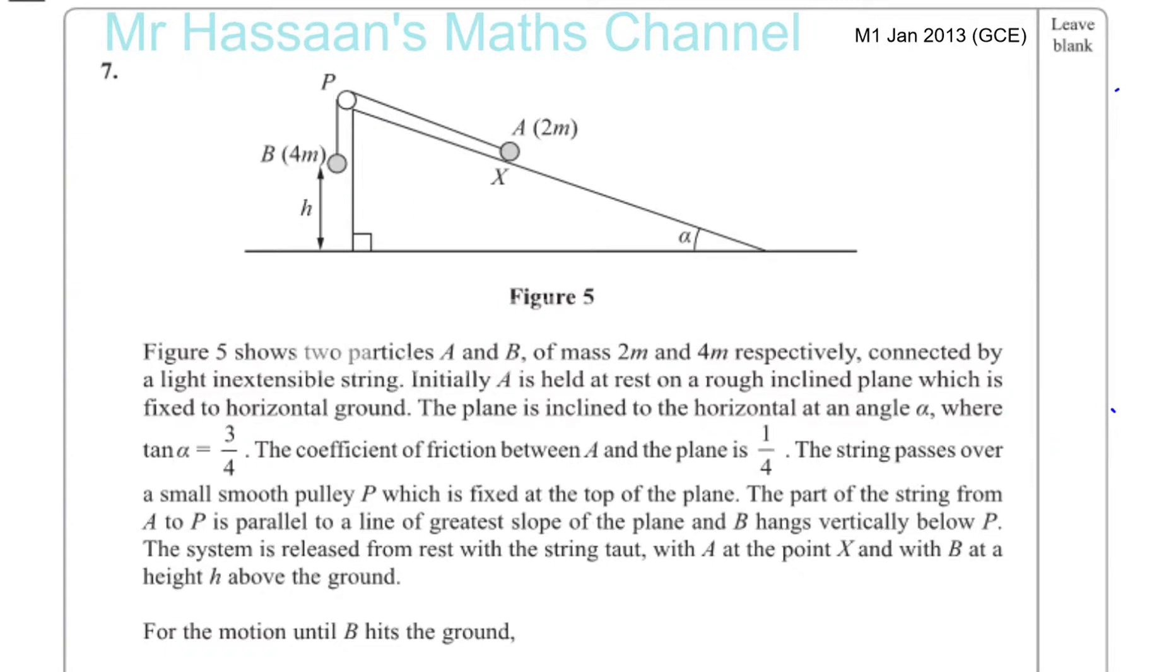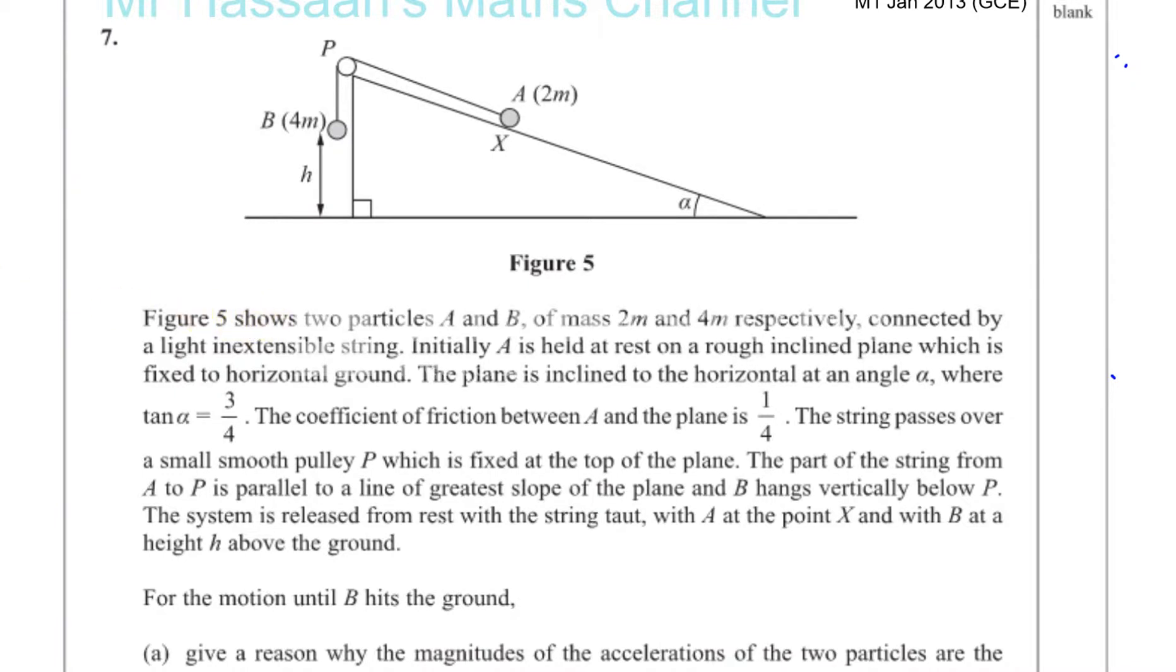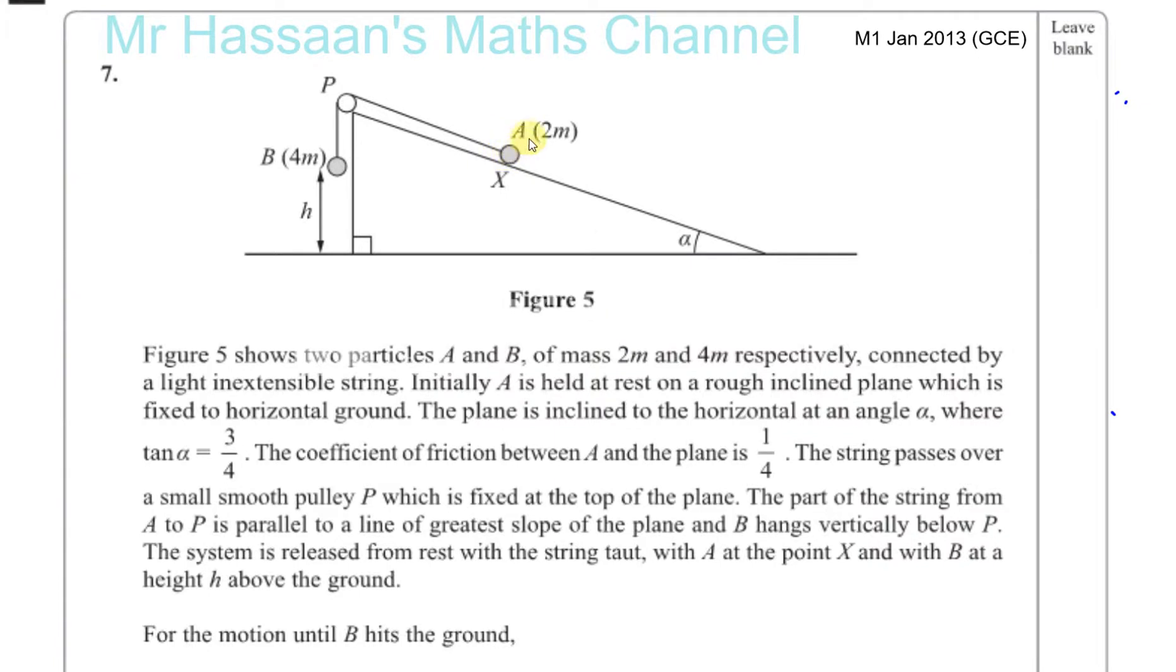What we need to do here is read the question very carefully so we get all the points that are important from it. Figure 5 shows two particles A and B of mass 2m and 4m respectively, so A is 2m and B's mass is 4m, connected by a light inextensible string. Light meaning we don't consider any weight of the string and inextensible meaning that any particle attached to it will have the same magnitude of acceleration. Initially A is held at rest on a rough inclined plane. So the word rough here tells us how friction is going to be involved, which is fixed to horizontal ground. The plane is inclined to the horizontal at angle of alpha, where the tangent of alpha equals 3 quarters.